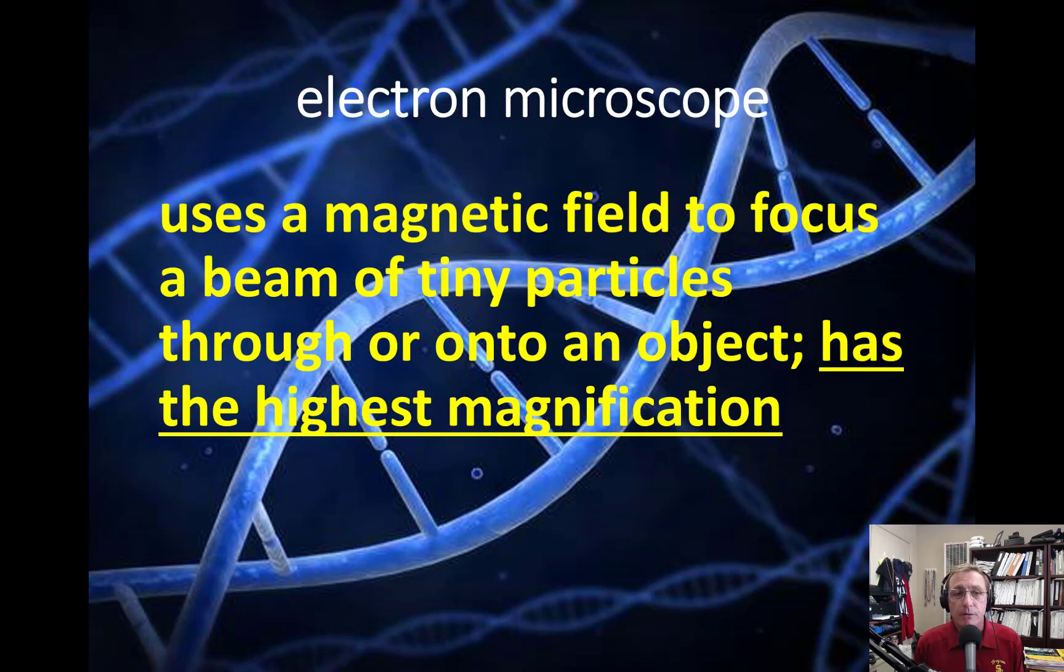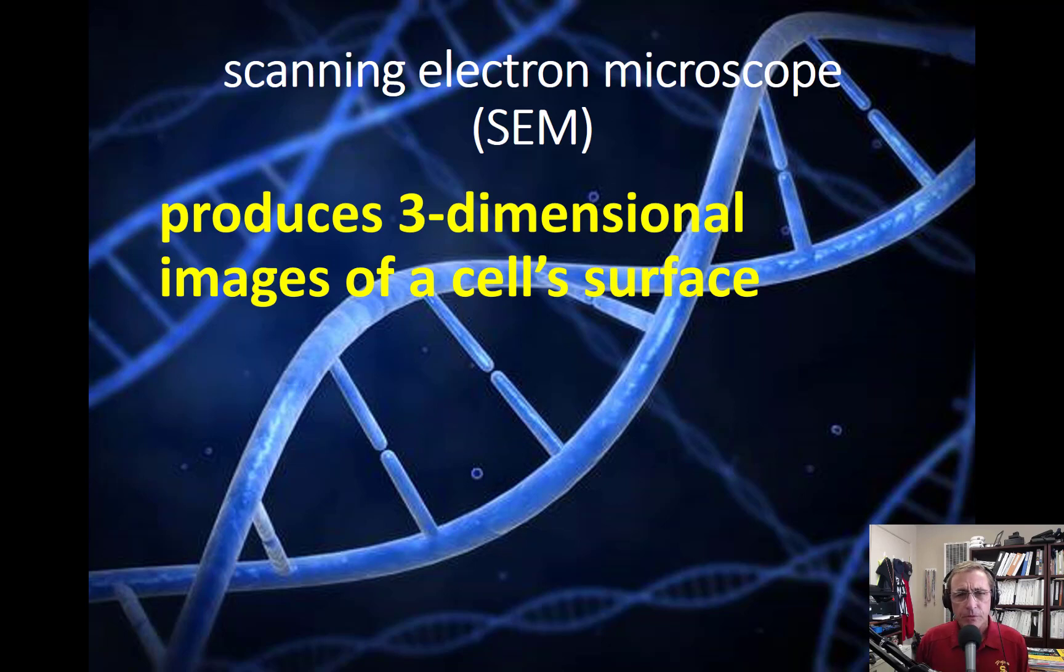Now an electron microscope, on the other hand, uses not light, but magnetic field, hence the name electron, to focus a beam of tiny particles, called electrons, through or onto an object, and it has the highest magnification. Okay. You really need to know that. Trust me. Now, I don't know that we've talked about specific types of electron microscopes, but you do need to know this for the test. Not exactly sure why it's on the test, but they are. Okay. So a scanning electron microscope, SEM.